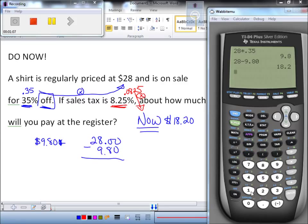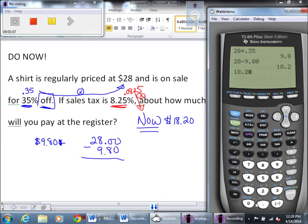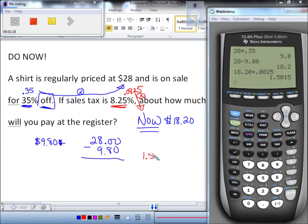So I'm going to multiply that. So $18.20 times 0.0825 equals $1.50. And what does $1.50 represent? Oh, that's your tax. That's my tax.